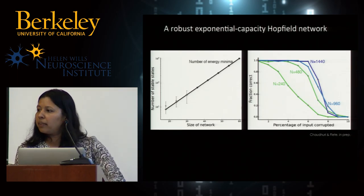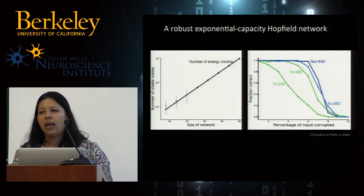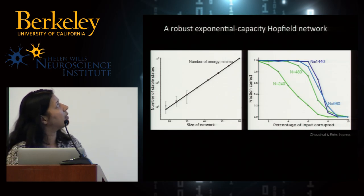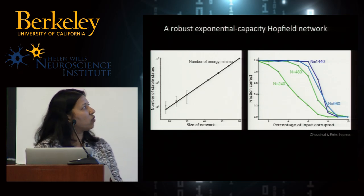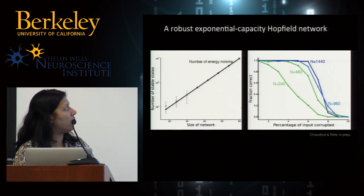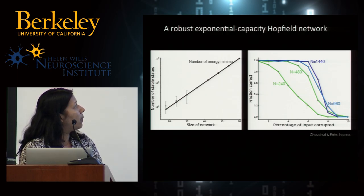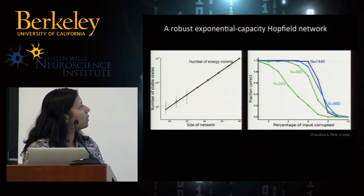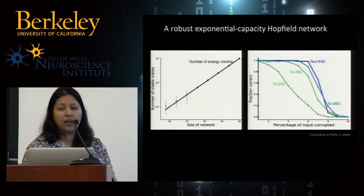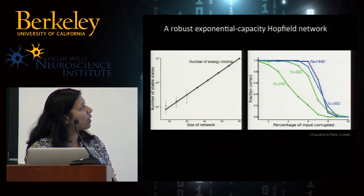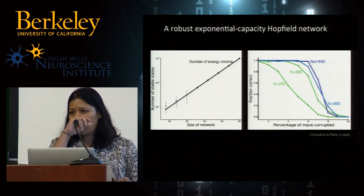The bottom line is that it actually is possible to construct a robust and exponential capacity Hopfield network — exponentially many states with linearly many neurons, and basins of attraction that scale with network size. The system is robust, and the dynamics allow for correct decoding, noise reduction, or error correction. We can construct these networks where the number of states grows exponentially with network size on a semi-log plot, and the fraction of correct decoding events remains near perfect even when about 4-6% of nodes are corrupted.